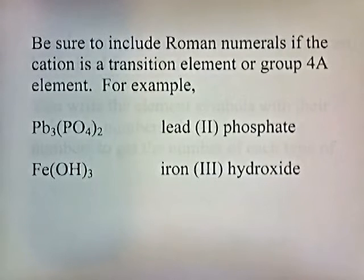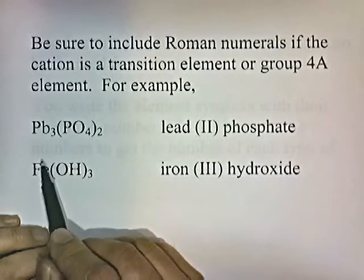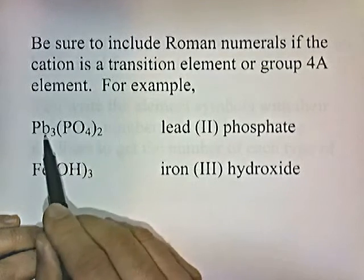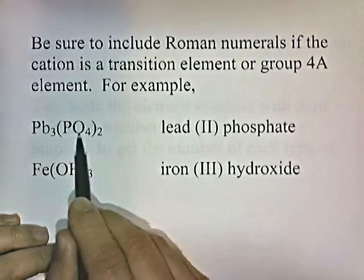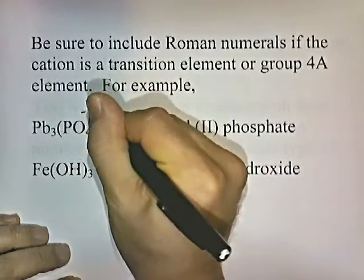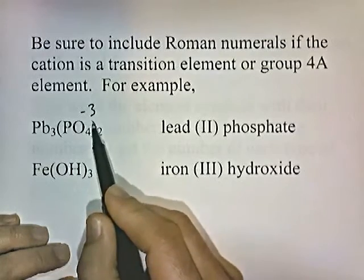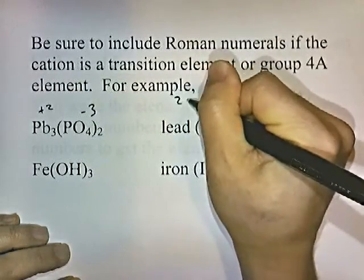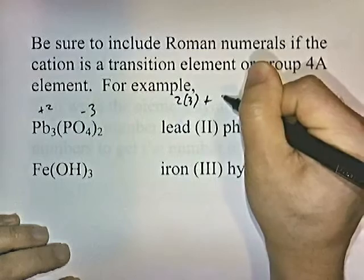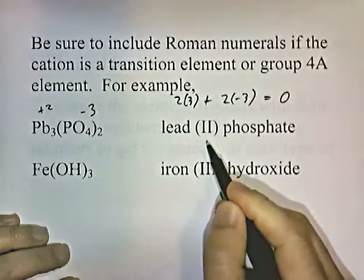Be sure to include Roman numerals if the cation is a transition element or a group 4A element. For example, Pb3(PO4)2 — Pb is lead and PO4 is phosphate, but you can't just call it lead phosphate. Phosphate has a negative three charge, and there are two of them, giving negative six total. To balance, the lead must have a plus two charge. So it is lead 2 phosphate.